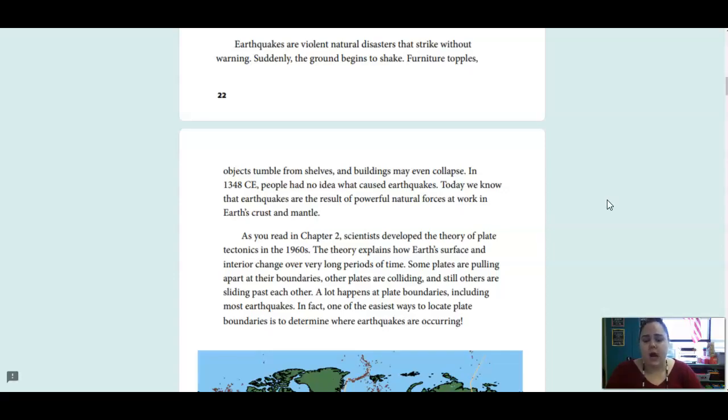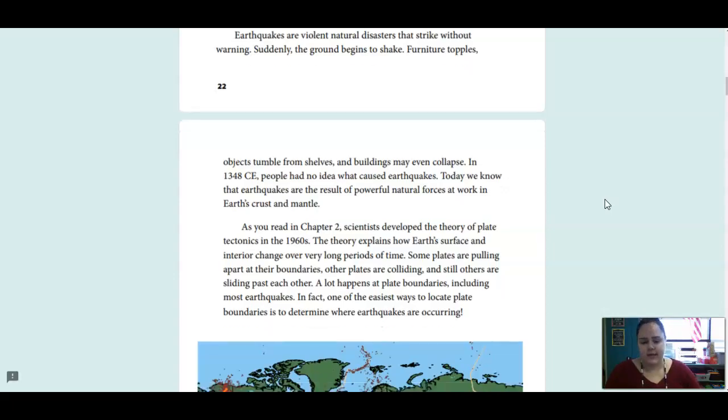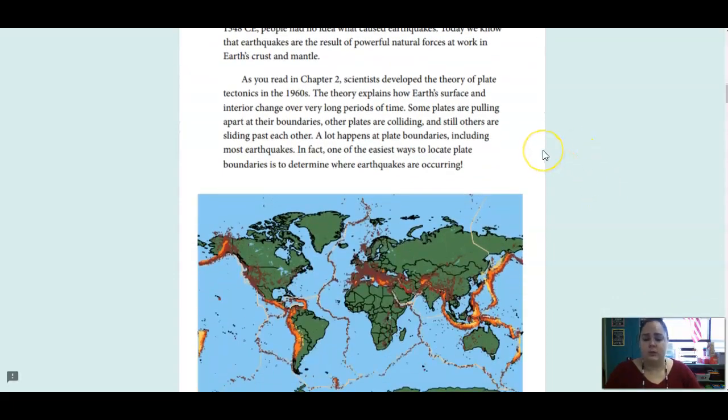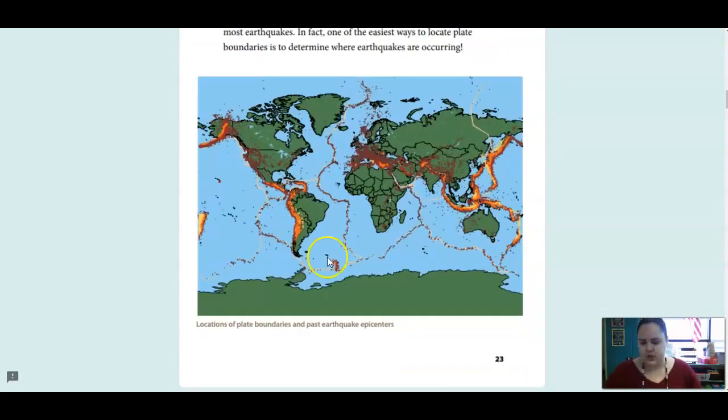Earthquakes are violent natural disasters that strike without warning. Suddenly, the ground begins to shake. Furniture topples. Objects tumble from shelves. And buildings may even collapse. In 1348 CE, people had no idea what caused earthquakes. Today, we know that earthquakes are the result of powerful natural forces at work in Earth's crust and mantle. As you read in Chapter 2, scientists developed the theory of plate tectonics in the 1960s. The theory explains how Earth's surface and interior changed over very long periods of time. Some plates are pulling apart at their boundaries, other plates are colliding, and still some are sliding past each other. A lot happens at plate boundaries, including most earthquakes. In fact, one of the easiest ways to locate a plate boundary is to determine where the earthquakes are coming from. So, this is showing all of the different spots where plate boundaries are and past earthquake epicenters. So, you can see all of the colors are where those boundaries are happening between the two plates, and that's where the earthquakes are starting from.